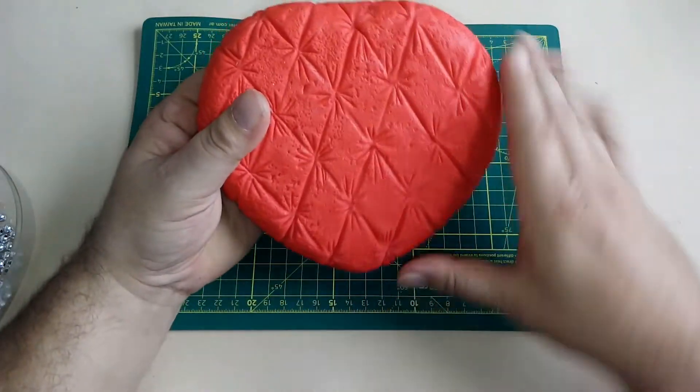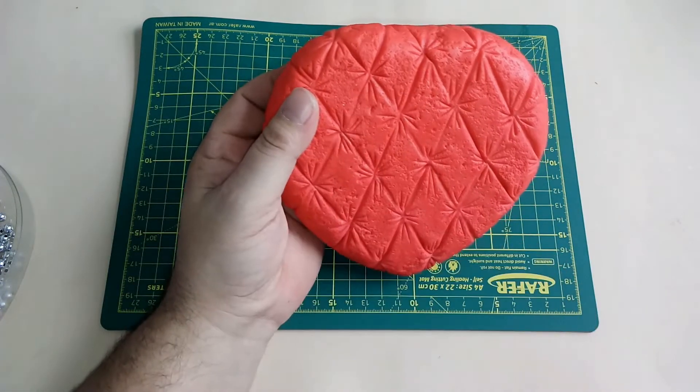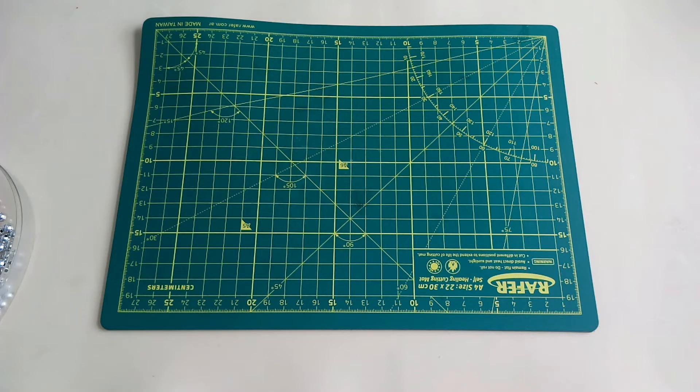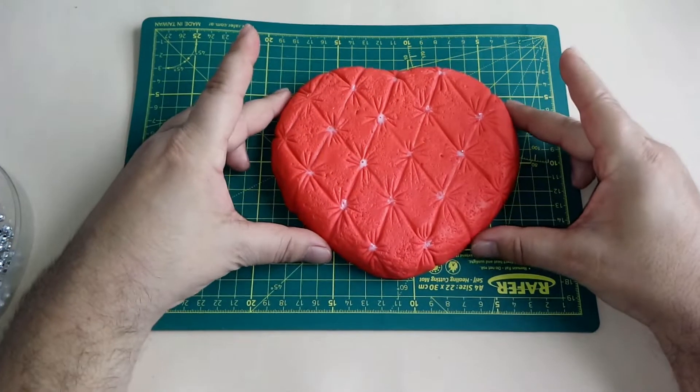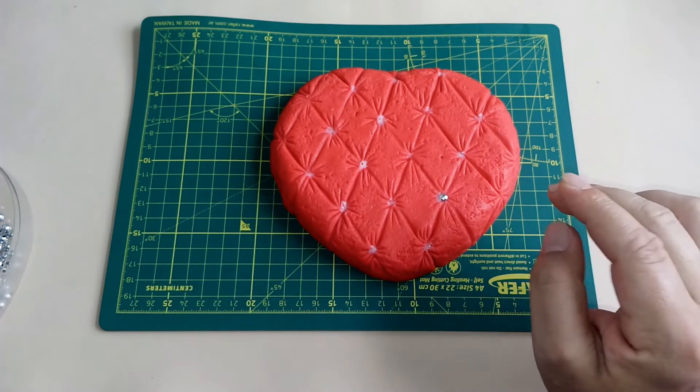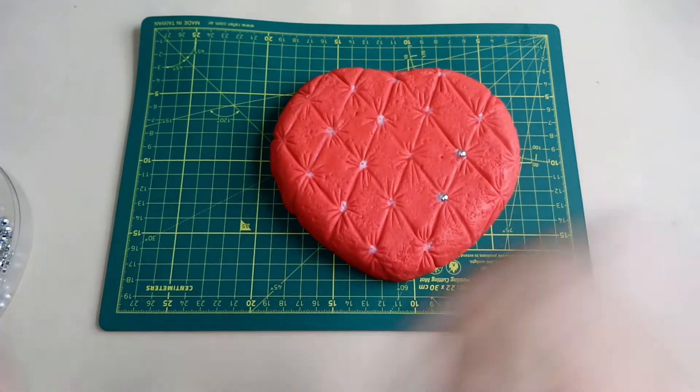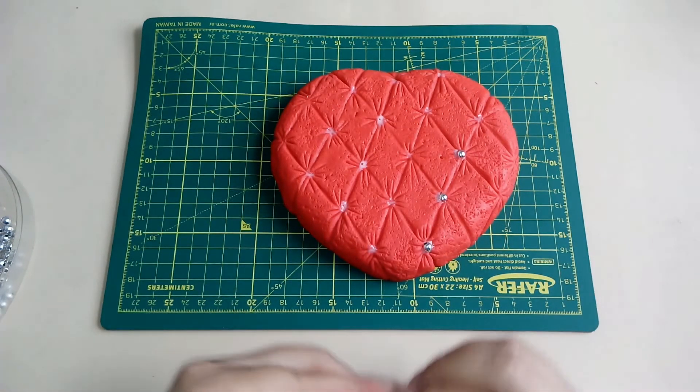Una vez que terminamos con la textura, lo que voy a hacer es, en cada cruce, colocar un poquito de cola vinílica. Es solo una gotita. Y ahí voy a comenzar a pegar unas perlitas, en este caso, plateadas. Las voy a ir hundiendo en la masa, asegurándome de que queden agarraditas.